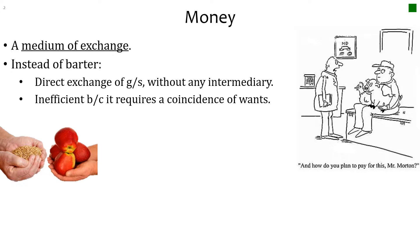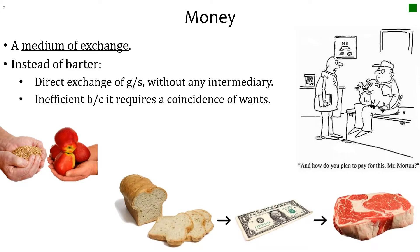Imagine a farmer who goes to the doctor and wants to pay with a hen or a hawk — what if the doctor doesn't want any of those? The solution is money. If you have bread and you want meat, convert your bread to money first and then use money to buy meat. Money is issued by the central bank.